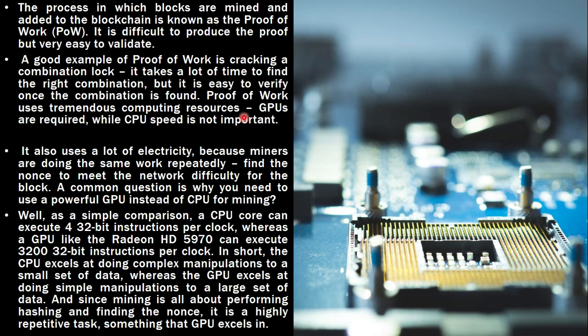Proof of work uses tremendous computing resources. GPUs are required while CPU speed is not important. I'll tell you a small story — I tried to mine some blocks. There was a cryptocurrency, I think Dogecoin or something like that. I tried to mine it but I only had a CPU, an Intel i5 processor. I kept it running for 24 hours and got 0.00001 BTC, which was really very little. What I want to convey is: if your GPU speed is much higher, you can earn a great amount of Bitcoin, Ethereum, or whatever cryptocurrency you mine.